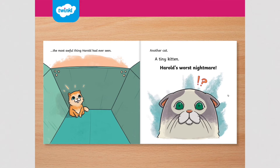The most awful thing Harold had ever seen — another cat, a tiny kitten. Harold's worst nightmare. Harold doesn't look very pleased, does he?